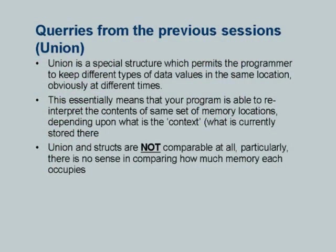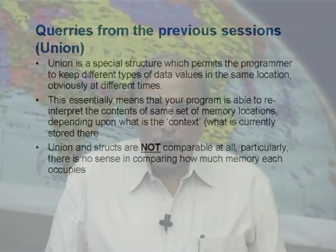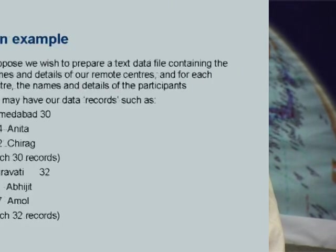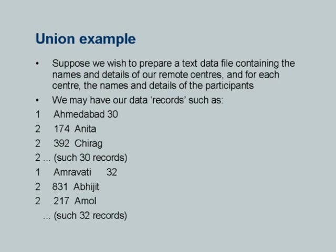Unions, on the other hand, do not allocate memory to different types of components defined as part of the union. Rather, a union is a mechanism to permit different interpretation of data stored in the same location, obviously at different times. Here is an example of the use of union.